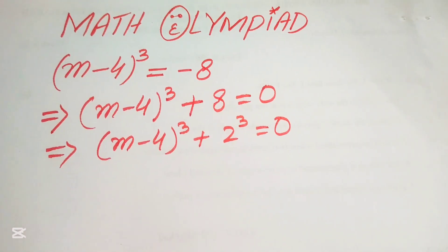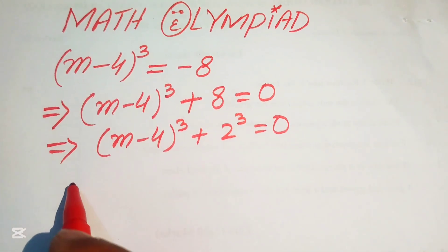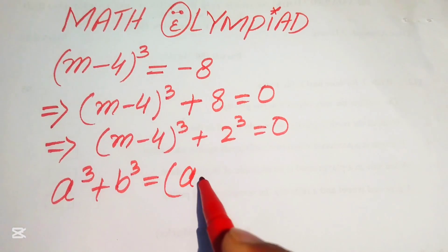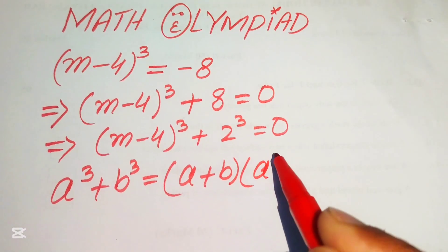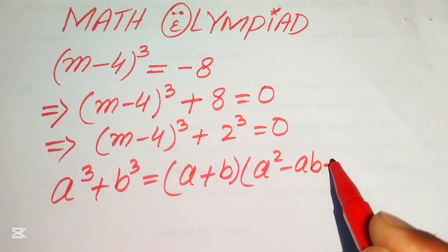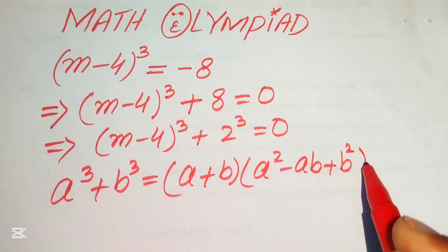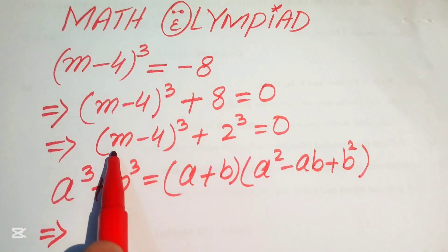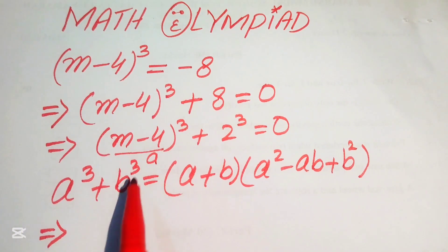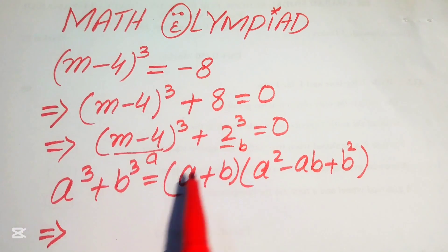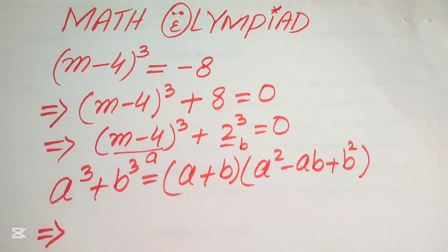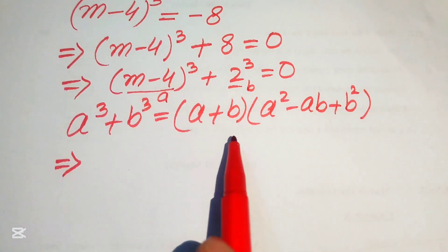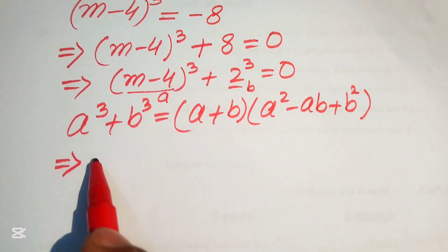Now we apply the sum of cubes formula: a³ + b³ = (a + b)(a² - ab + b²). According to this formula, we identify our values: a = (M - 4) and b = 2, and we rewrite our equation using this factorization.